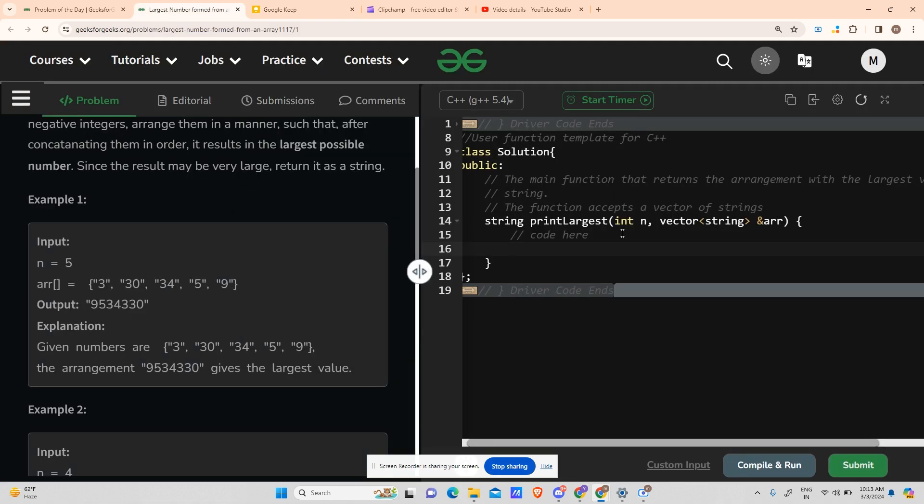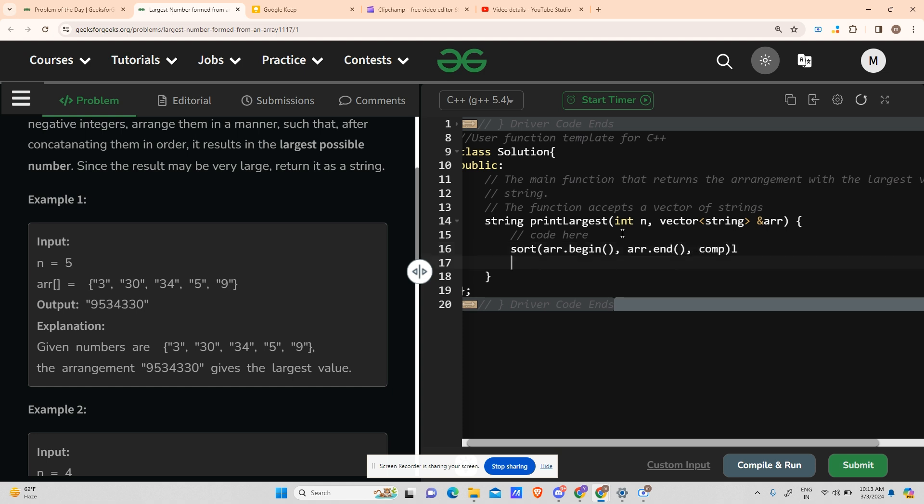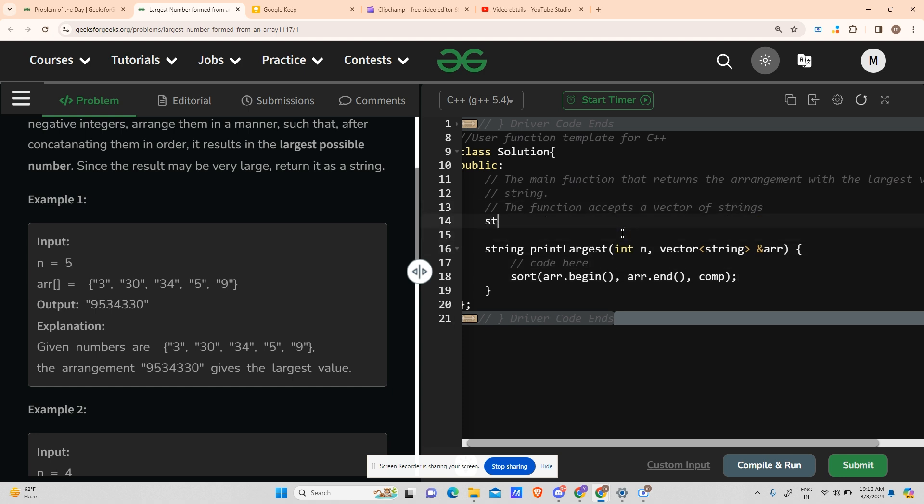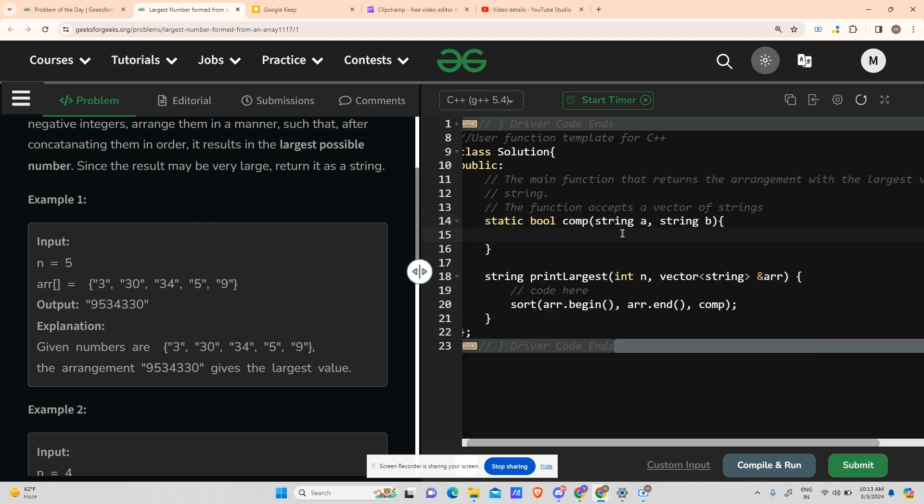What we were doing at this first step is to sort the array. So sort arr.begin, comma arr.end, but sorting in some other fashion. We will be using a compare function for that. We will be defining the compare function: static bool compare. Compare will be taking two strings, String A and String B.